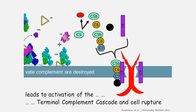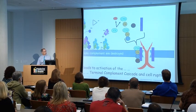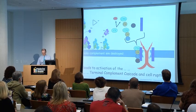We have another cascade — this is called the terminal complement cascade — and this generates what Carla showed you as MAC, the membrane attack complex, and the cell is damaged.